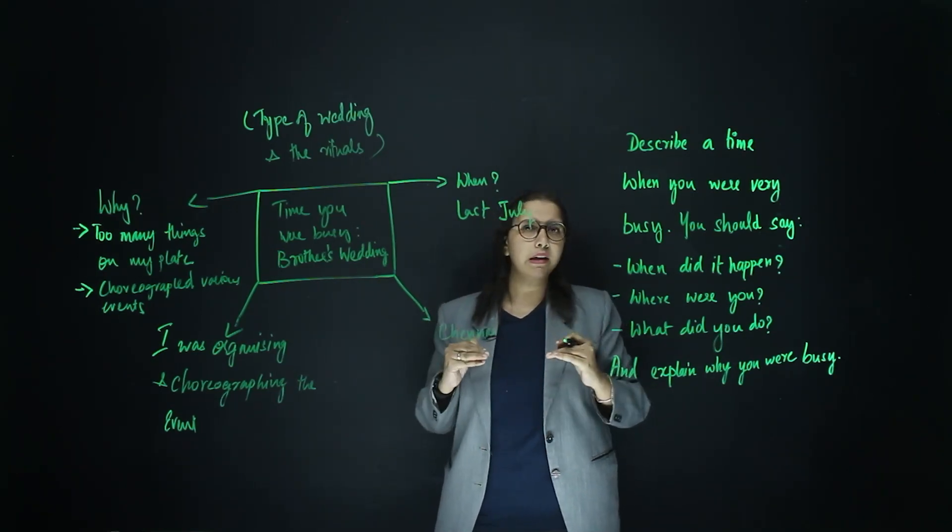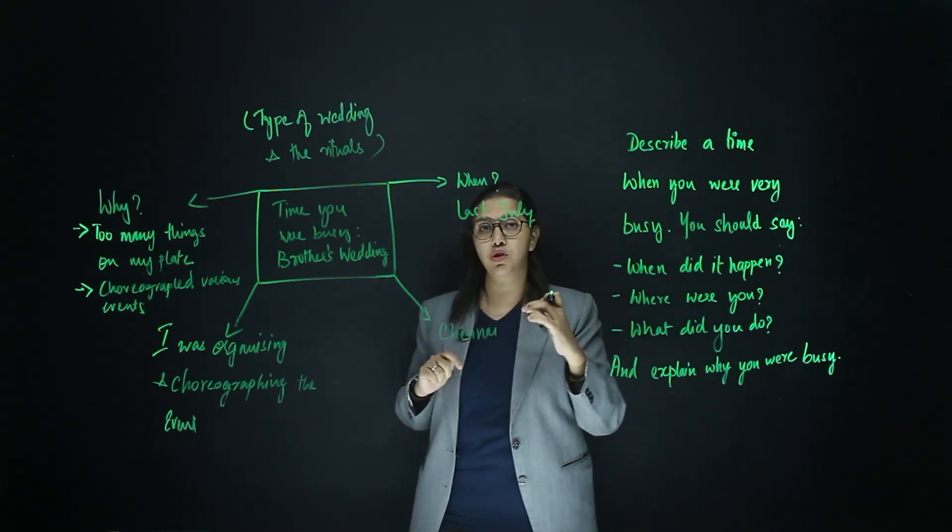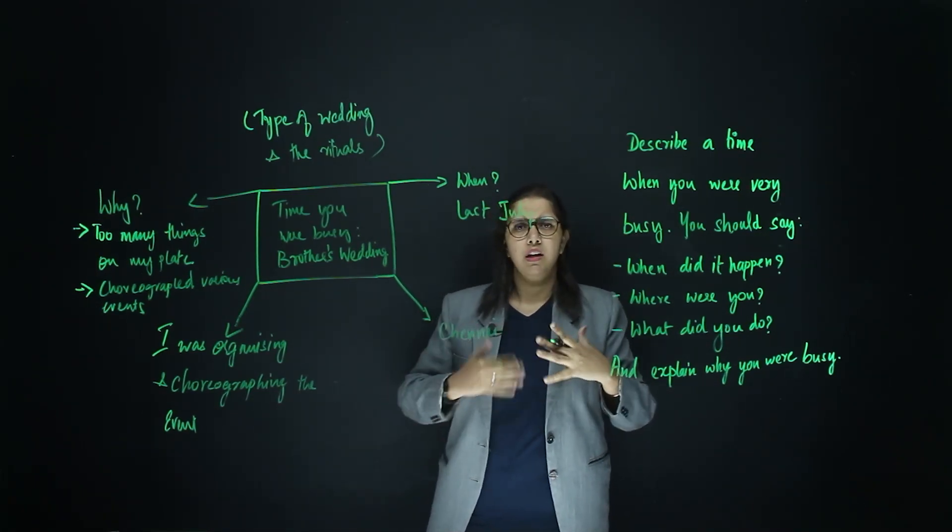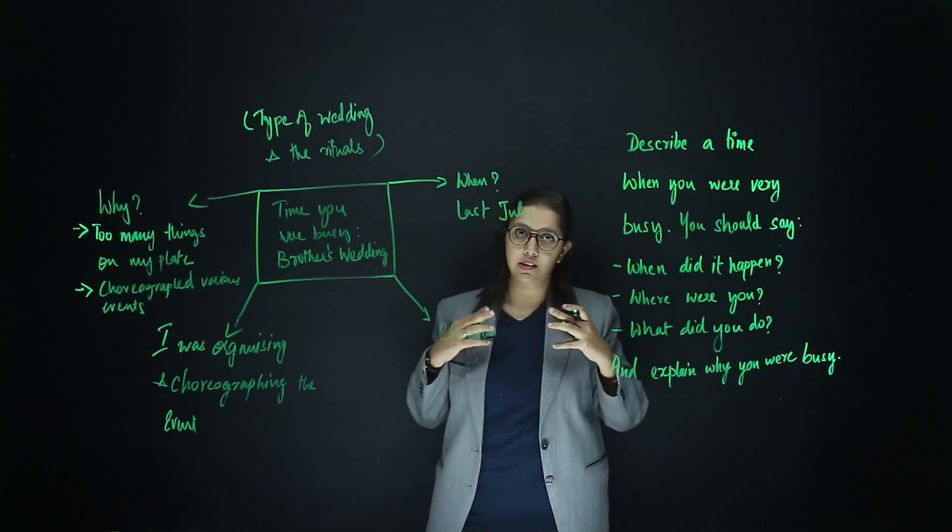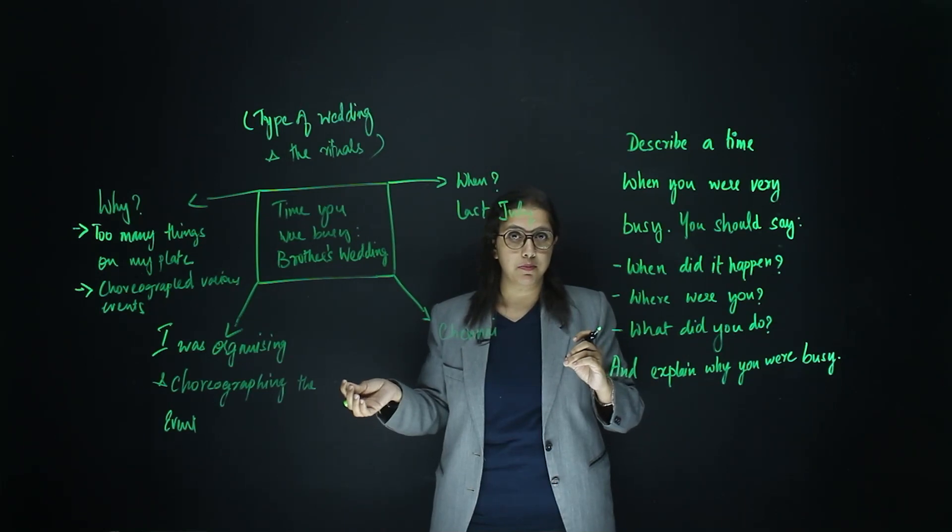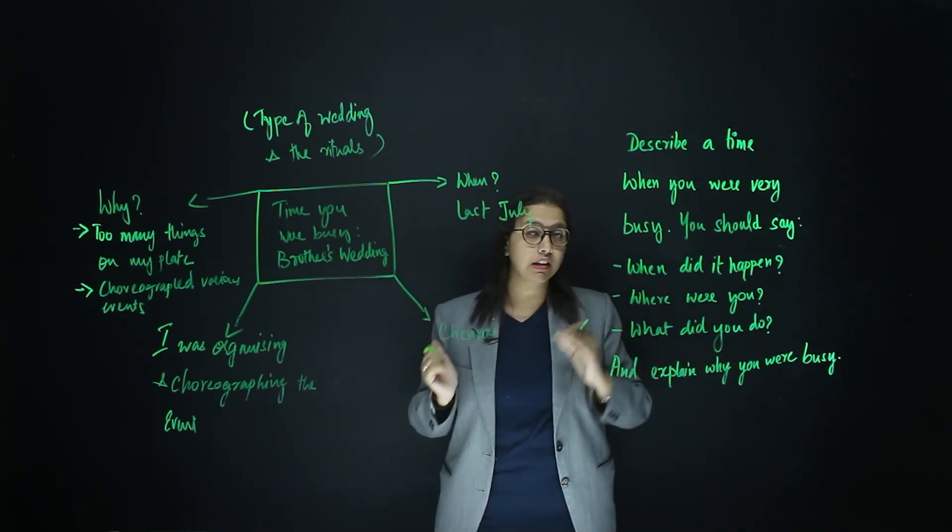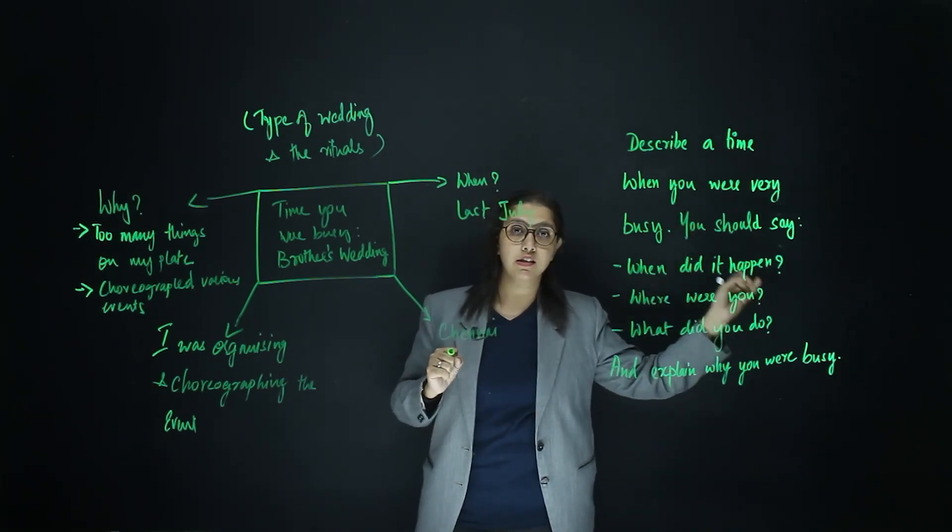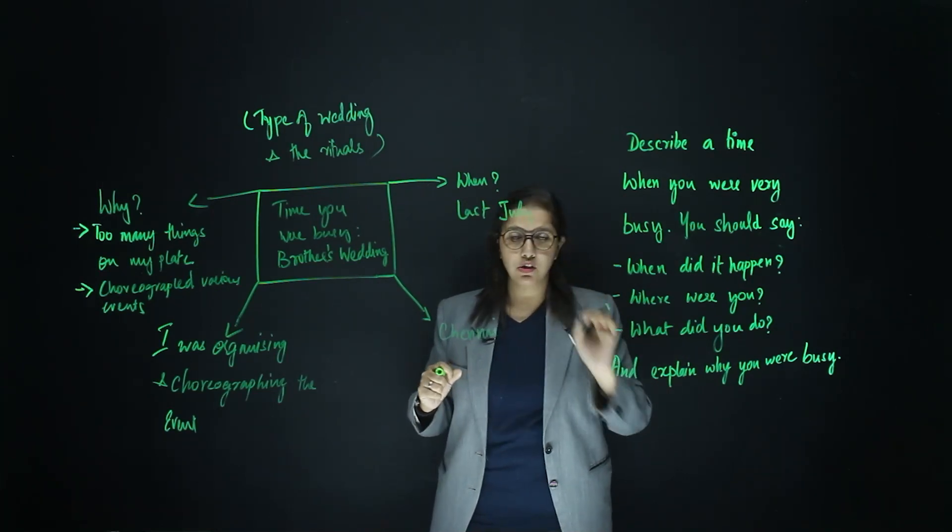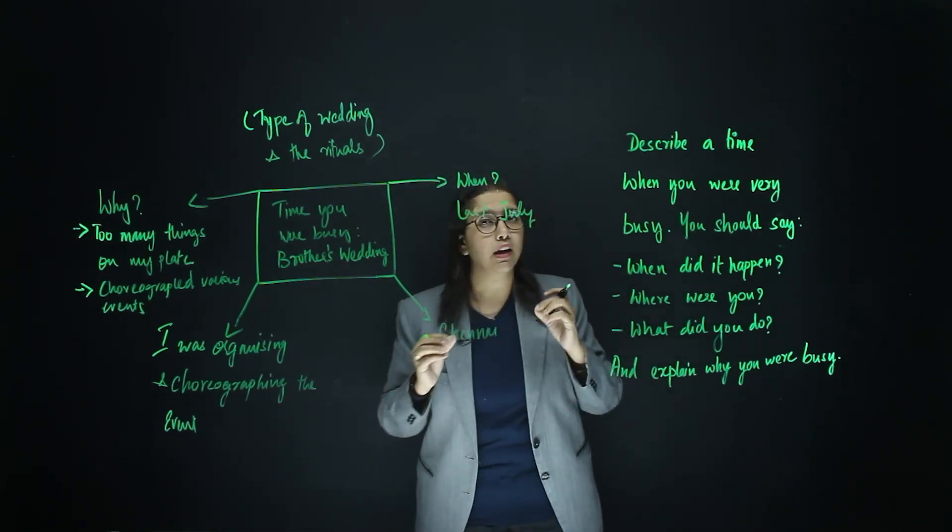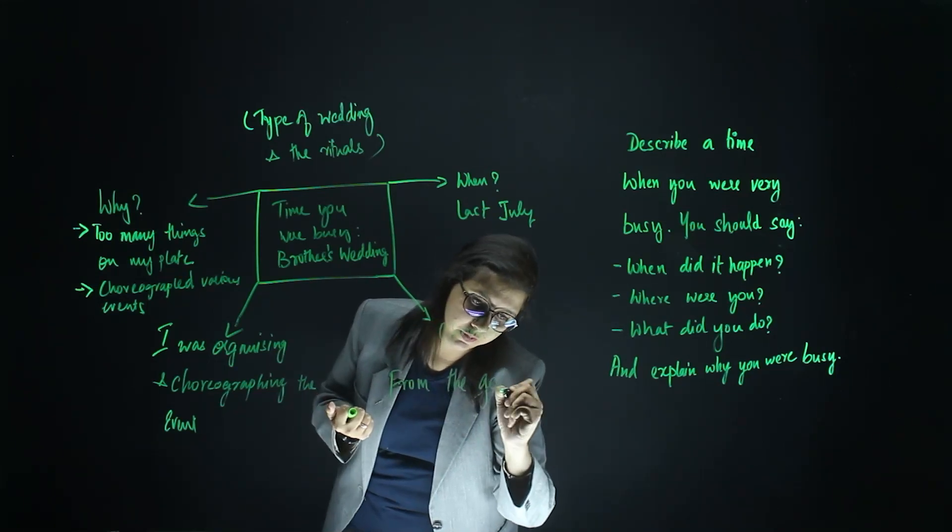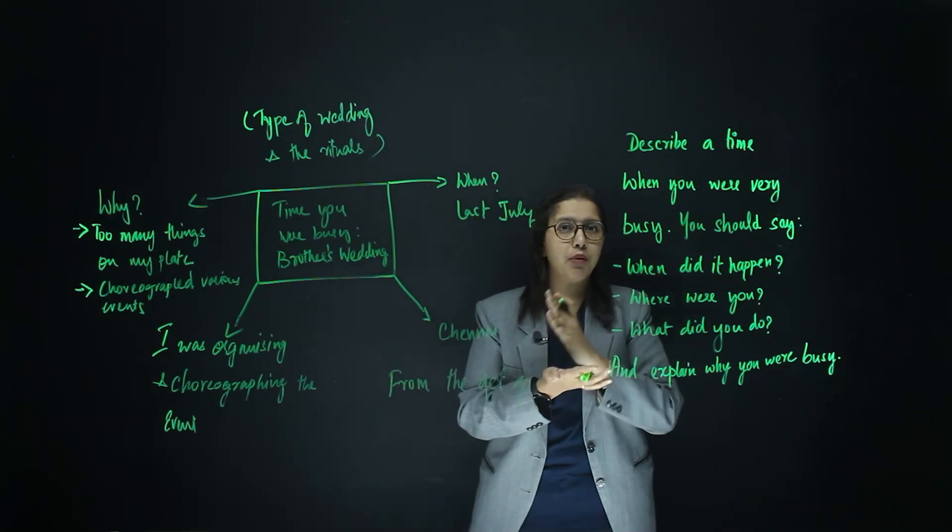Now, let me give you an example of how you could string these information together. First thing you are going to do is, you are going to start by saying that in our day-to-day life, we are often busy with a lot of important tasks. But one particular day where I was extremely busy that I can remember is my brother's wedding. The wedding happened last July and was conducted in Chennai. And I remember the day very clearly as I was very busy from the get-go. Now, what am I doing here? I am using certain phrases that show the significance of time. From the get-go basically means that from the very beginning, from the start of the day.